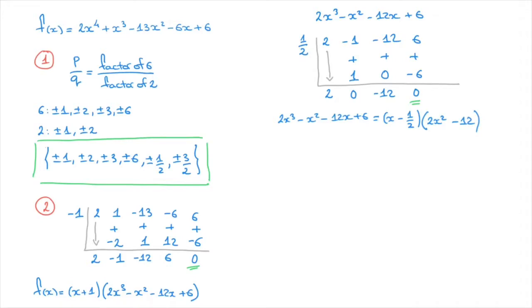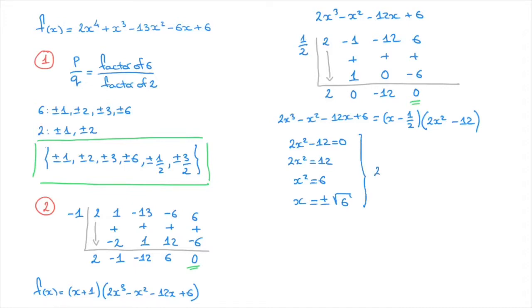All we have to do now is solve the quadratic 2x² - 12 = 0 to find any remaining zeros. That gives 2x² = 12, then x² = 6, and finally x = ±√6. These results allow us to rewrite the quadratic 2x² - 12 as 2(x - √6)(x + √6).